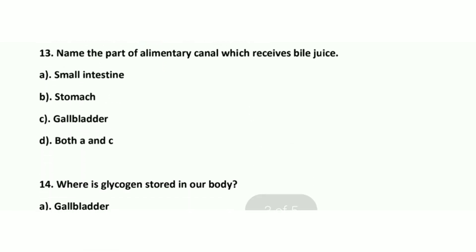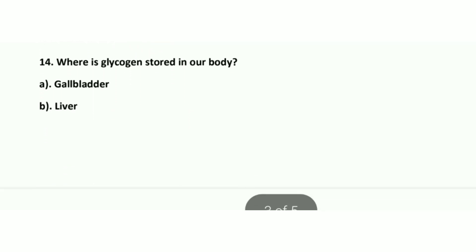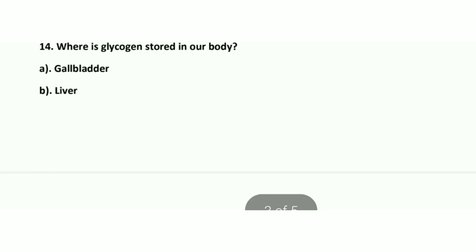Question number 13: Name the part of the alimentary canal which receives bile juice. Bile juice is received by the small intestine. Option A. Question number 14: Where is glycogen stored in our body? Glycogen is an internal reserve and it is stored by the liver. Option B is correct.